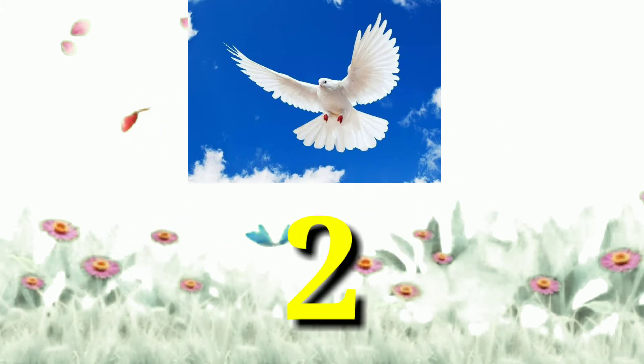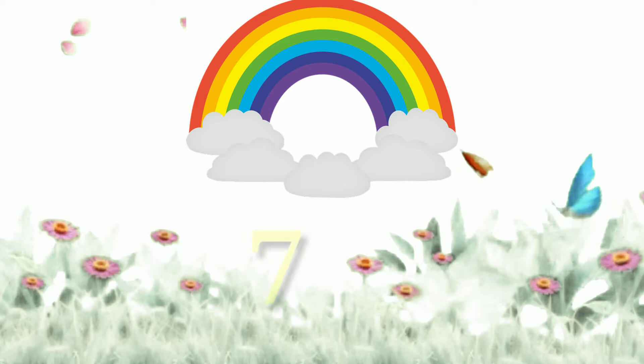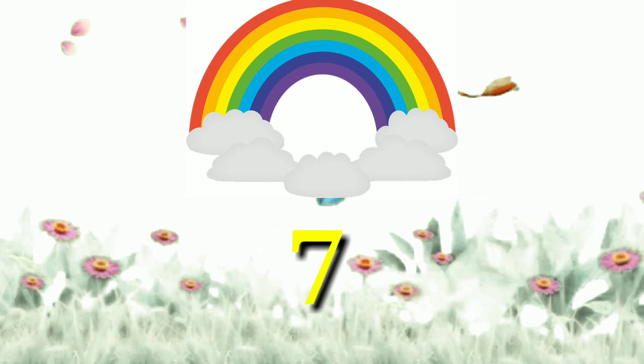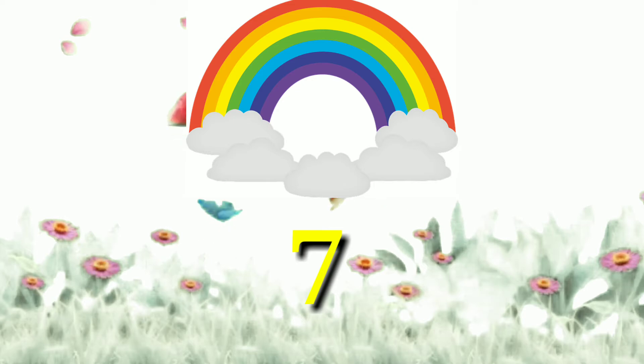Ya pakshala don't pankha ahit. How many colors does a rainbow have? 7. Indra Dhanushat, 7 ranga astat.